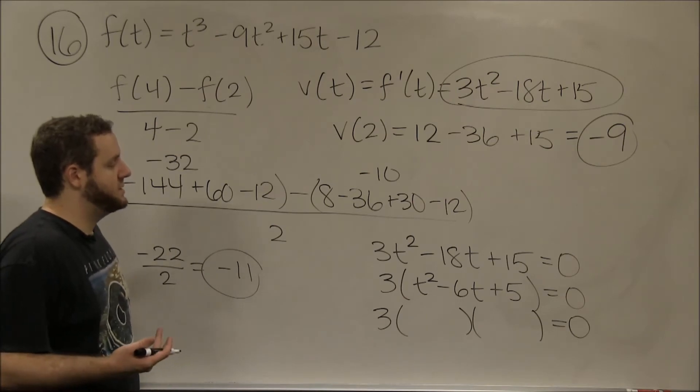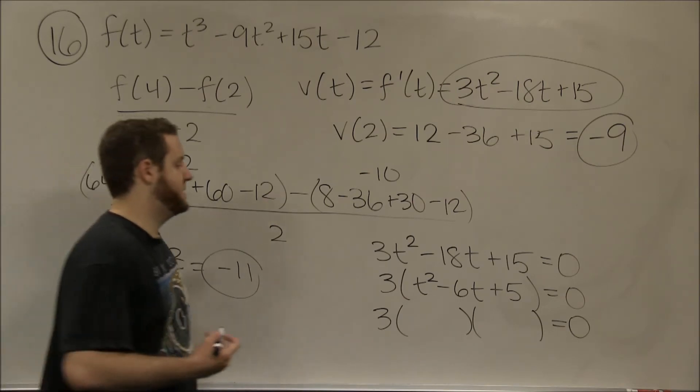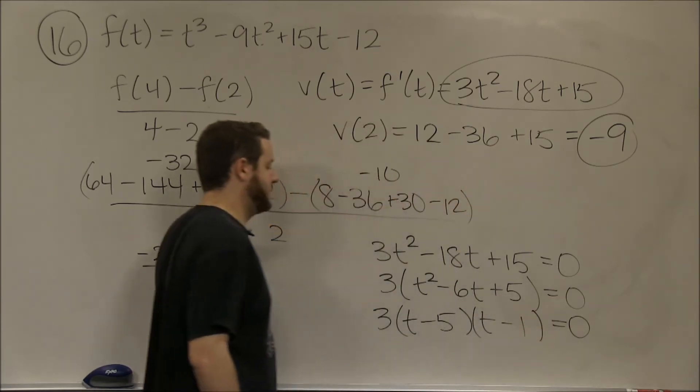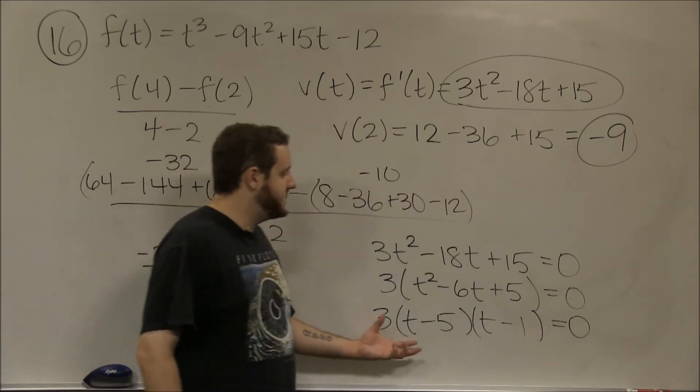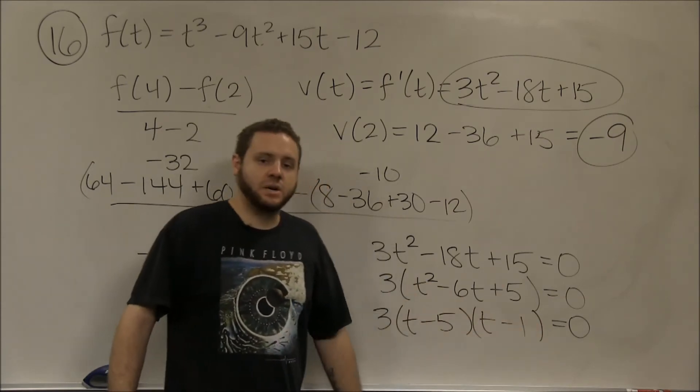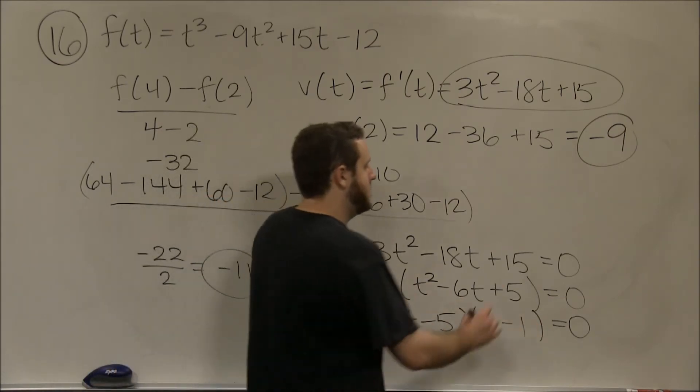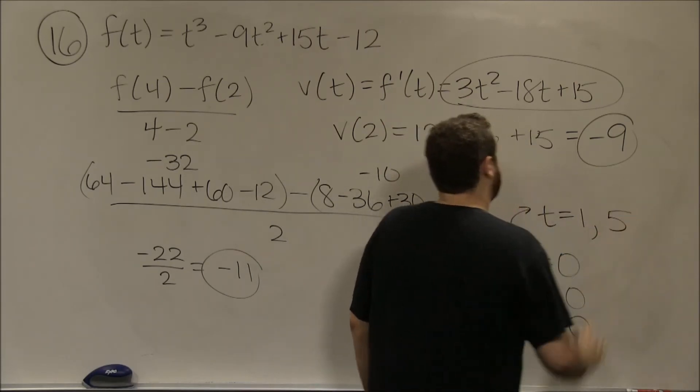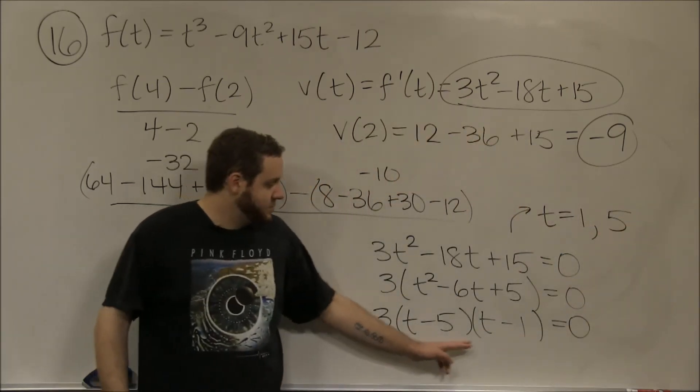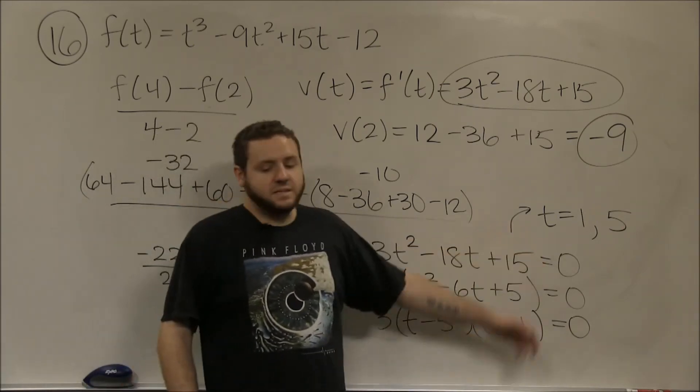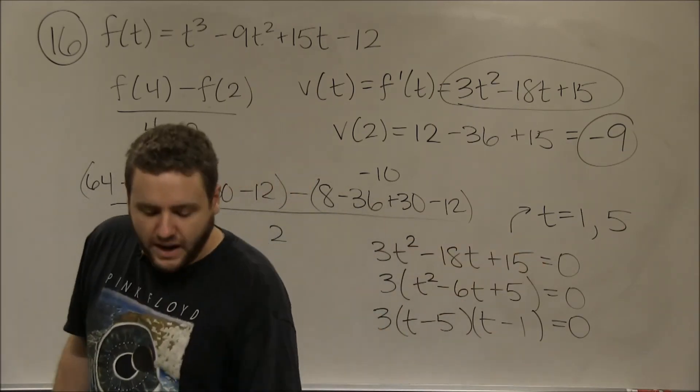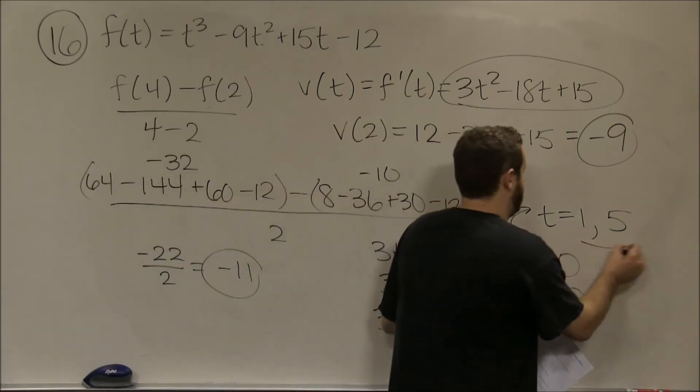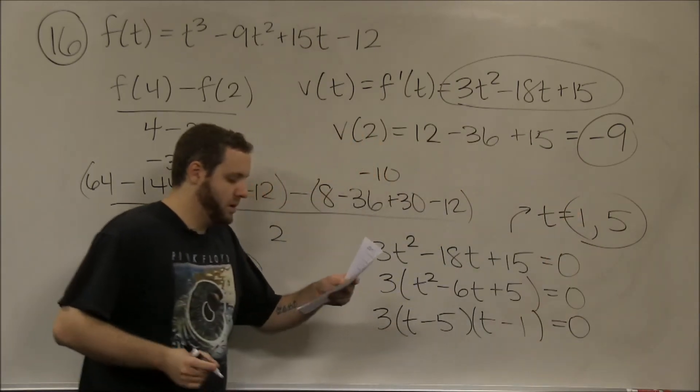This can be factored into two terms. We need two things that multiply to 5 but add together to be negative 6. The only way we can do that is (t - 5)(t - 1). Either of these terms could equal 0, which tells us t equals 1 and 5. If t equals 1 or 5, the particle is at a complete stop. That's the answer to part d.